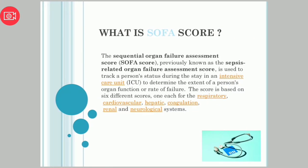What is SOFA score? The Sequential Organ Failure Assessment score, previously known as the Sepsis-Related Organ Failure Assessment score, is used to track a person's status during their stay in an intensive care unit to determine the extent of a person's organ function or rate of failure. The score is based on six different parameters: respiratory, cardiovascular, hepatic, coagulation, renal, and neurological system.